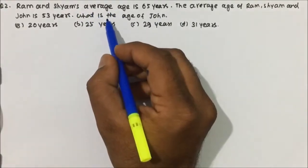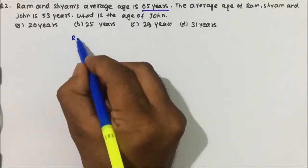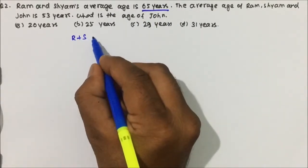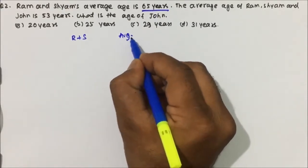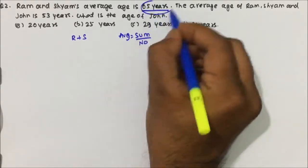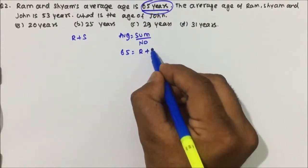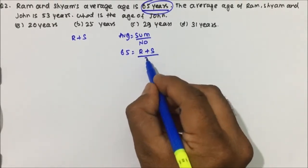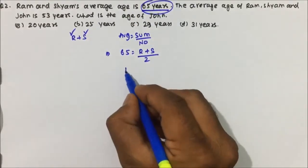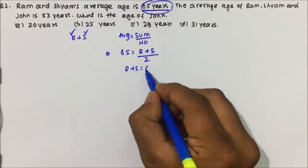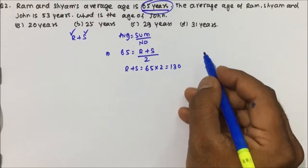Let's solve question number two. Ram and Siam's average age is 65 years. Average = sum / number. Average is 65, sum is Ram's age plus Siam's age, and number is 2. So Ram's age + Siam's age = 65 × 2 = 130.